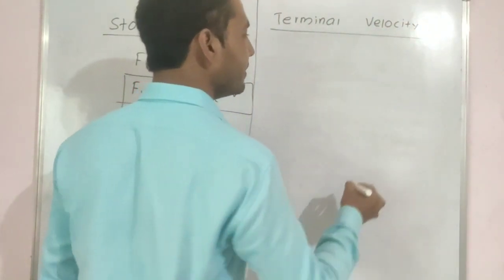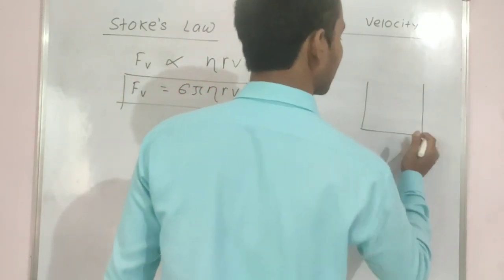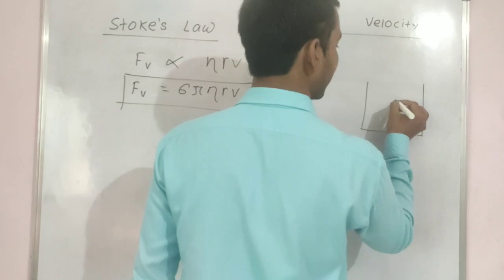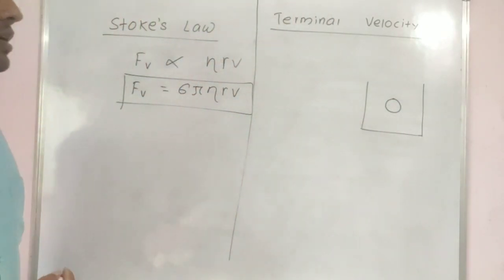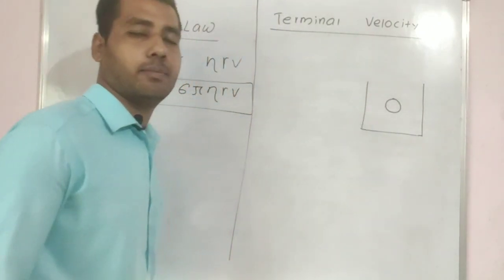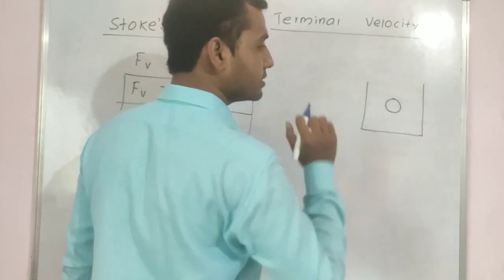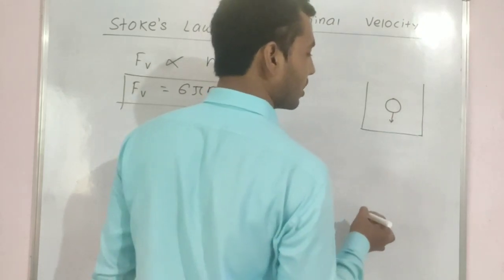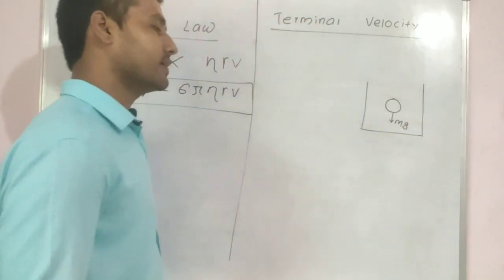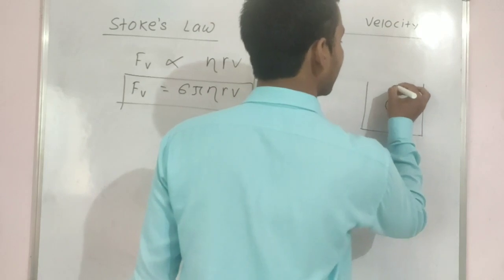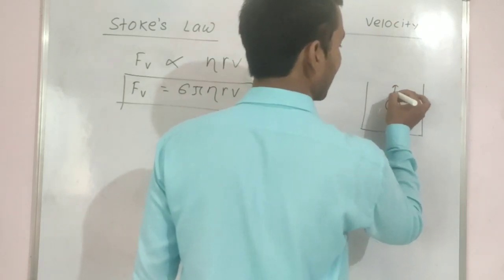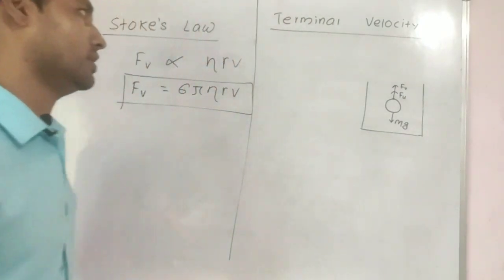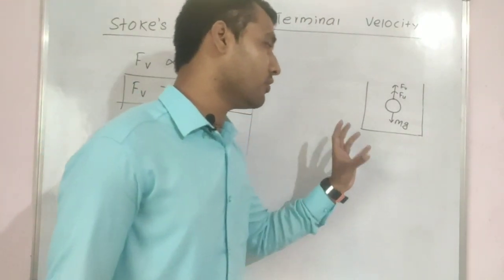Consider a container which consists of some viscous fluid. A spherical object of radius r is immersed in it. After immersion, it will move downward. At that point, three forces act on it: one force in the downward direction which is the weight mg, and two forces in the upward direction — the upthrust Fu and the viscous force Fv.